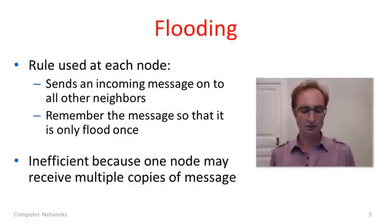So here is the rule for flooding. Now I'll remind you that this is a distributed setting so all nodes are executing this rule in parallel, concurrently. None of them know the overall topology of the network. The rule for flooding is very simple. That's its virtue. Every node, when you receive an incoming message which is meant to be flooded to the network, you simply send it out on all of your other links so it will reach all of your other neighbors except where it came from.